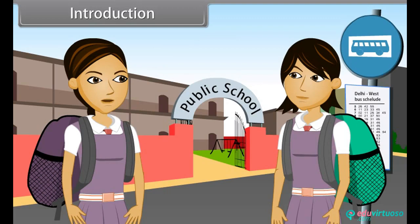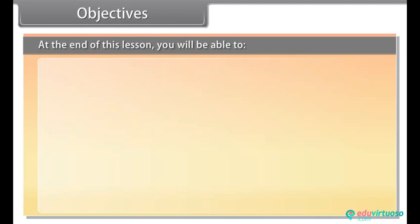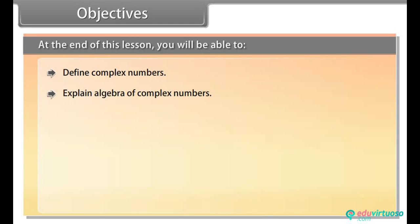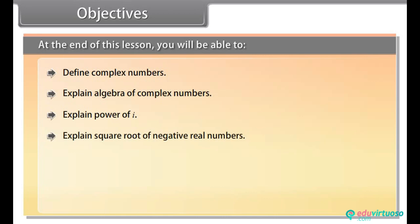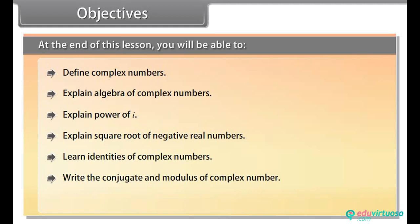At the end of this lesson, you will be able to: define complex numbers, explain algebra of complex numbers, explain power of iota, explain square root of negative real numbers, learn identities of complex numbers, write the conjugate and modulus of a complex number, and understand the polar representation of complex numbers.